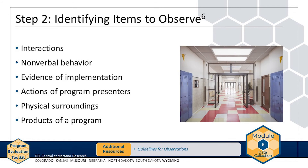After you identify evaluation questions, decide what you want to look for in observations. For instance, you might look for interactions, nonverbal behavior, evidence of implementation, actions of program presenters, physical surroundings, or products of a program. What you observe depends on the evaluation question you wish to answer. In the AMP example, the evaluation team might want to look for how many students attended AMP and what barriers exist that prevent AMP participants from completing homework. The team could observe students' behaviors or comments during AMP.